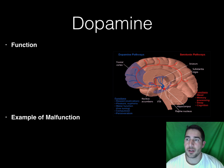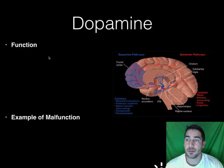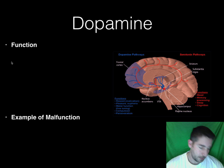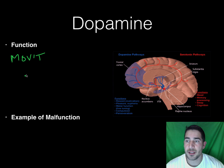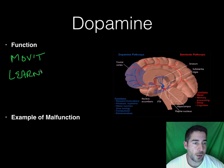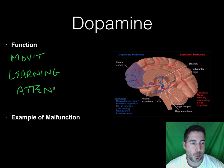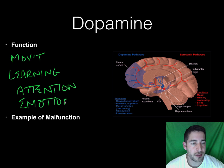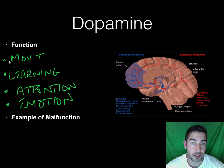Dopamine is the next one we're going to talk about. The function of dopamine includes movement — it helps with our movement — learning, attention, and emotion. So dopamine is a big one; it hits a lot of different things. It helps with our attention, our emotion, our learning, and then how we actually move.